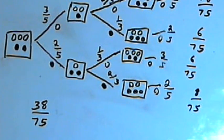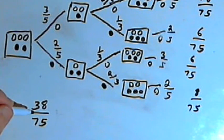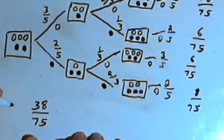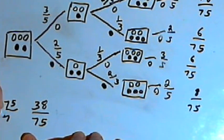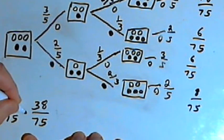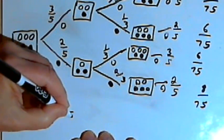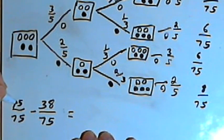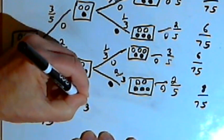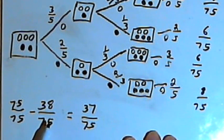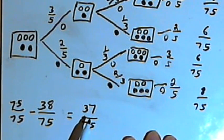The question also asks: what's the probability of choosing a black ball? The probability of choosing a black ball is the same as the probability of not choosing a white ball. We take the total probability — 75 over 75, in other words 100% — and subtract the probability of choosing the white ball, which is 38 over 75. So the probability of choosing a black ball is 75 minus 38, which is 37 over 75. It's slightly more likely that you'll choose a white ball — 38 over 75 versus 37 over 75.